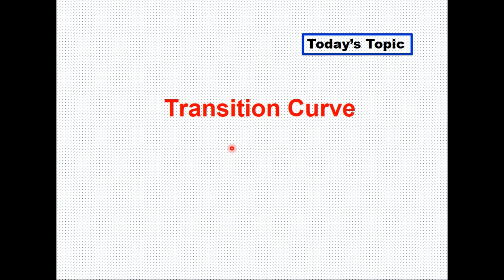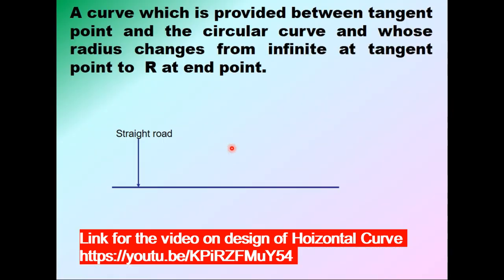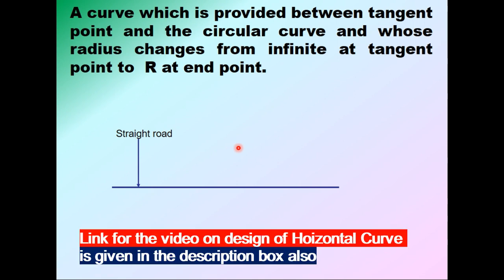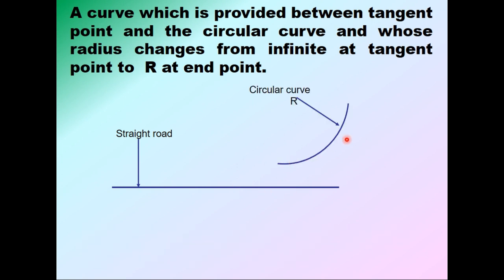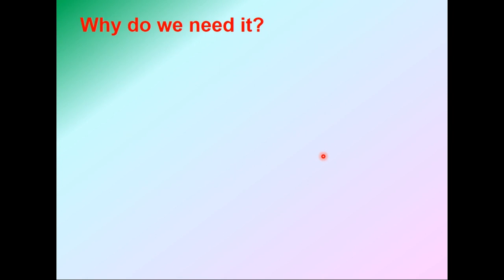Today we are discussing transition curves, which are part of the horizontal alignment of a route. A curve provided between the tangent point and the circular curve is the transition curve. If you have a straight route with a change in direction effected through a circular curve, the transition is provided between the straight road and the circular curve. The radius of the transition curve changes from infinite at the tangent point to the radius of the circular curve at the joining point.